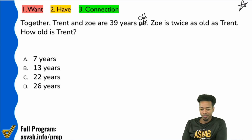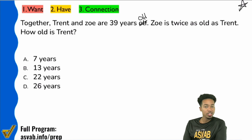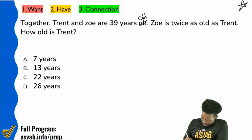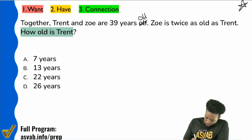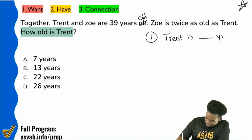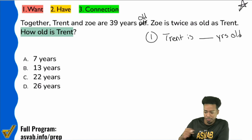What are we looking for? We're looking for age — specifically Trent's age. So let's keep things simple here. How old is Trent? We can say that Trent is blank years old.